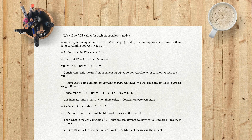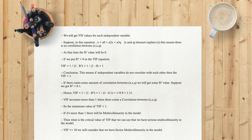VIF increases above 1 when there exists a correlation between X, Z, and Q. The minimum value of VIF equals 1. If it is more than 1, there is multicollinearity in the model. The critical threshold for serious multicollinearity is VIF greater than or equal to 10 — at that point we consider that we have severe multicollinearity in the model.